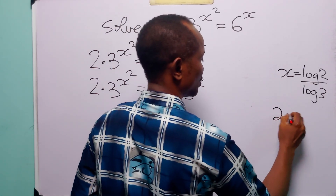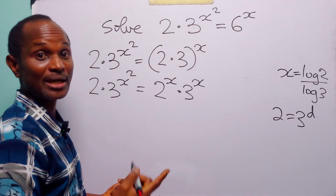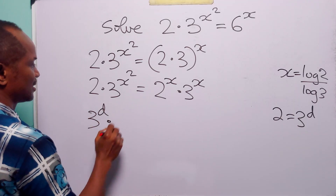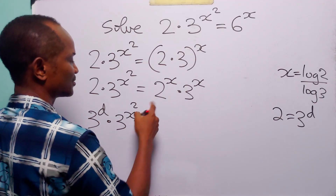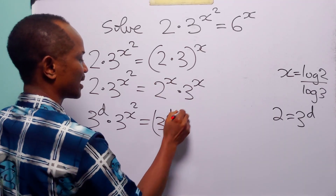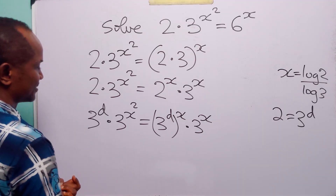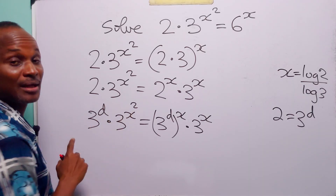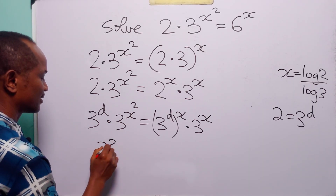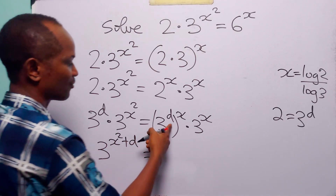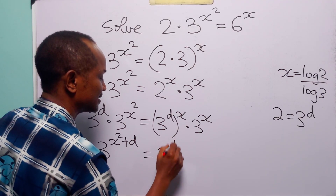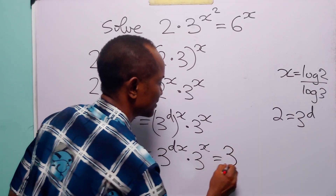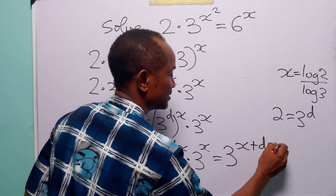Then we do a substitution. Let 2 be equal to 3 to the power d, where d is a real constant. With this substitution, we have 3 to the power d times 3 to the power x squared is equal to 3 to the power dx multiplied by 3 to the power x. Remember that when we multiply two numbers with the same base, we simply add their exponents. So here we have 3 to the power x squared plus d, equal to 3 to the power x plus dx.